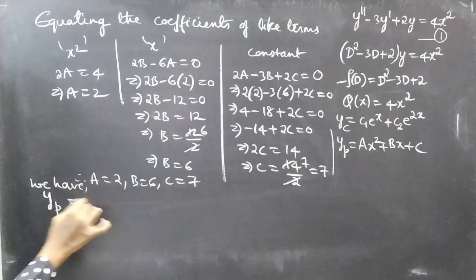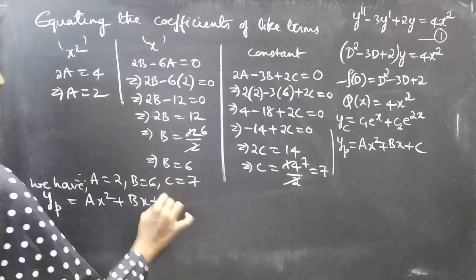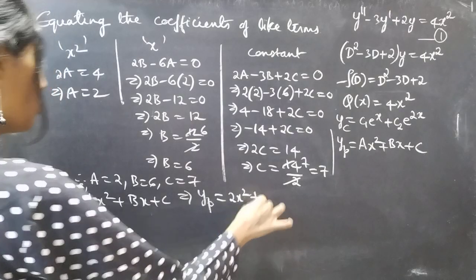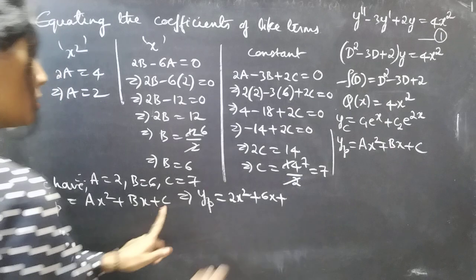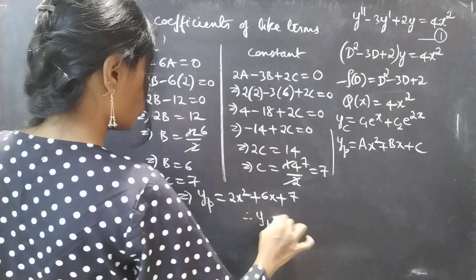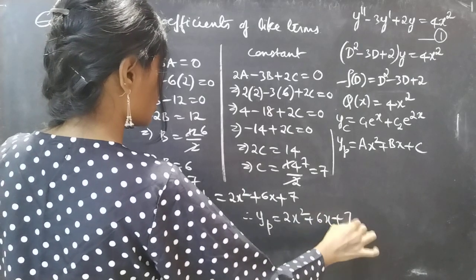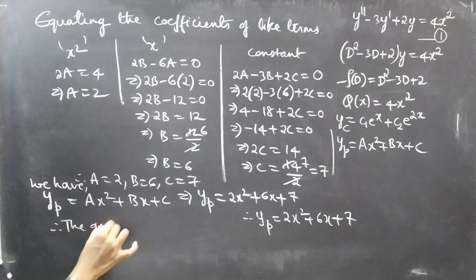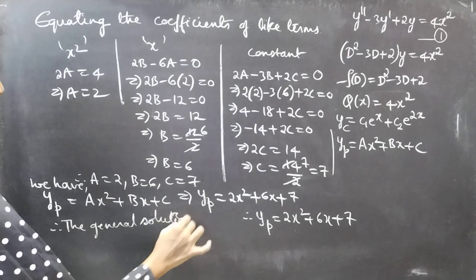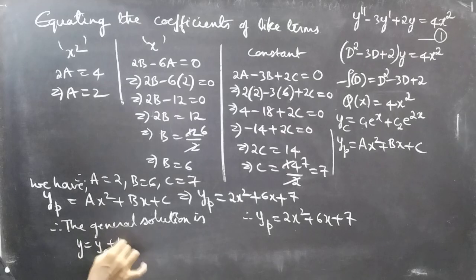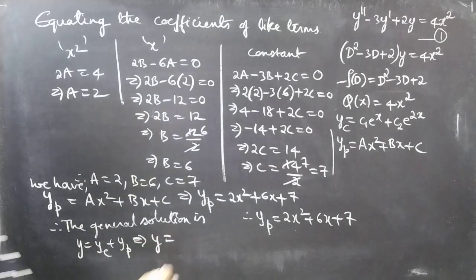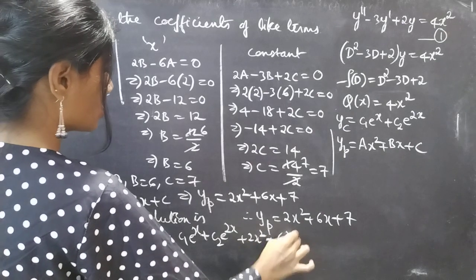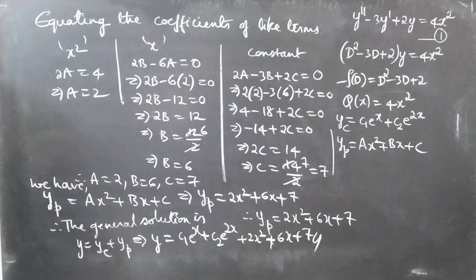Substituting A, B, C into yp = Ax² + Bx + C gives yp = 2x² + 6x + 7. We now have both yc and yp. The general solution is y = yc + yp = c₁eˣ + c₂e²ˣ + 2x² + 6x + 7, which completes the problem.